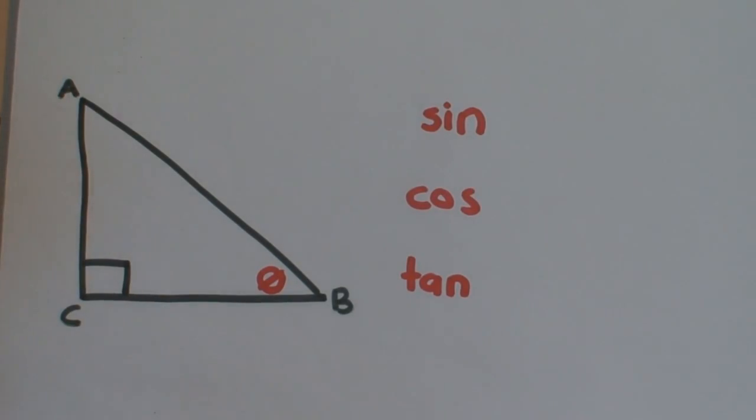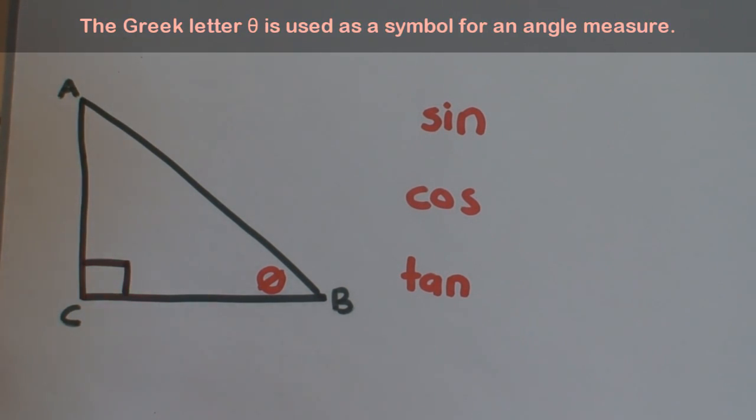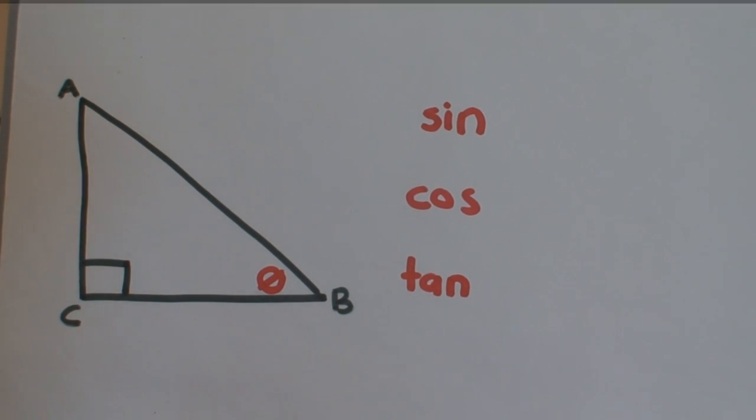In a triangle, if you know two angle measures, one of which must be 90 degrees, then the third is fixed because all angle measures in a triangle add up to 180 degrees. If you know one side length, then the others can be determined by using the following ratios.